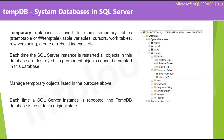Now let's look at the TempDB database. The temporary database is used to store temporary tables, single hash or double hash temp tables, table variables, cursors, work tables, row versioning, and indexes created or rebuilt in TempDB, etc. Each time the SQL Server instance is restarted, all objects in this database are destroyed, so permanent objects cannot be created here. Each time a SQL Server instance is rebooted, the TempDB database is reset to its original state.